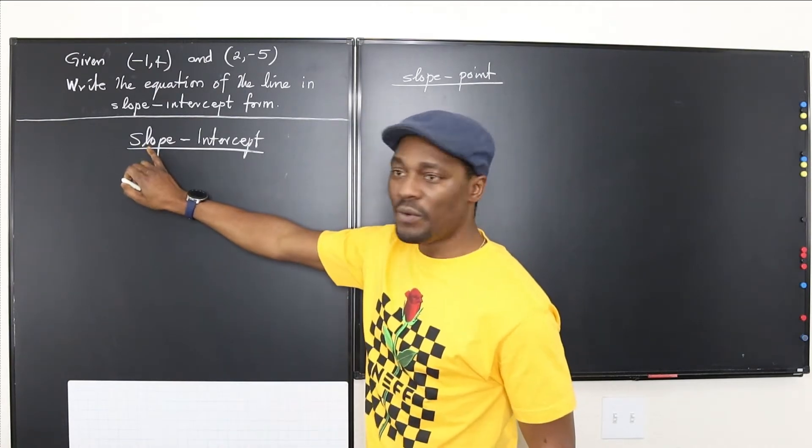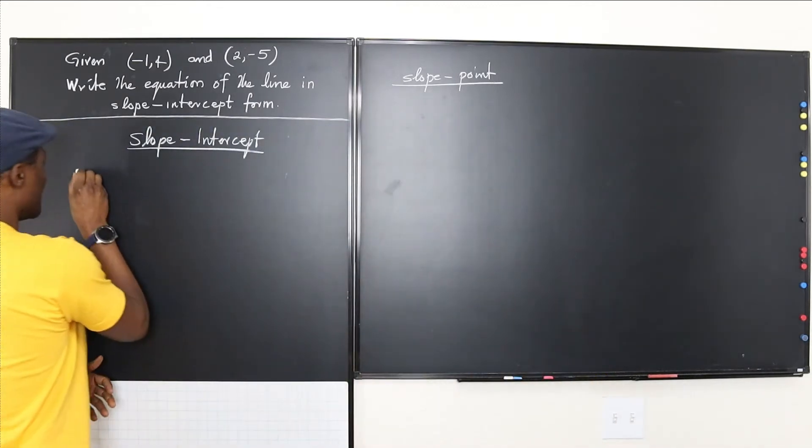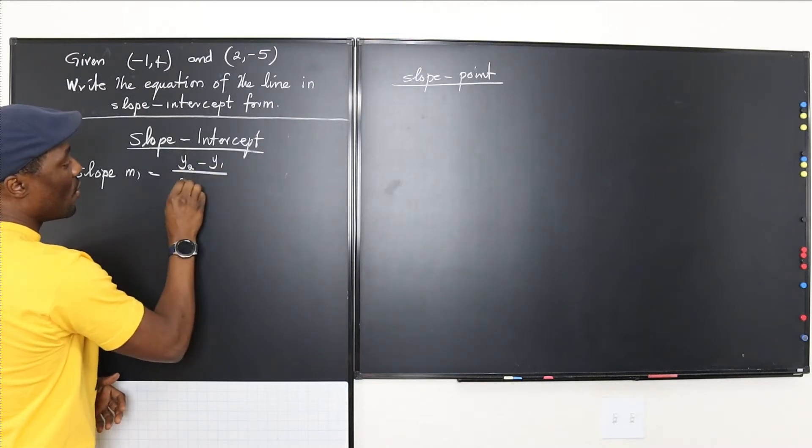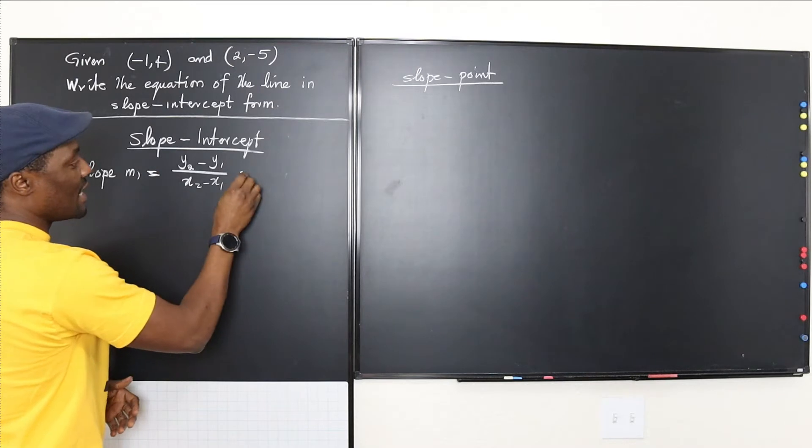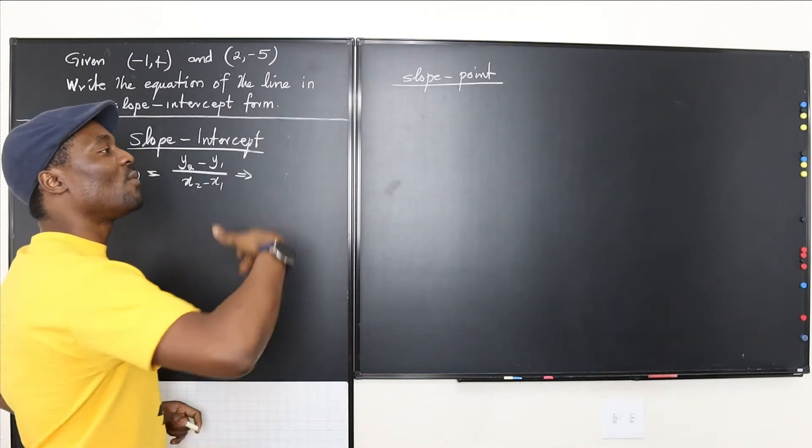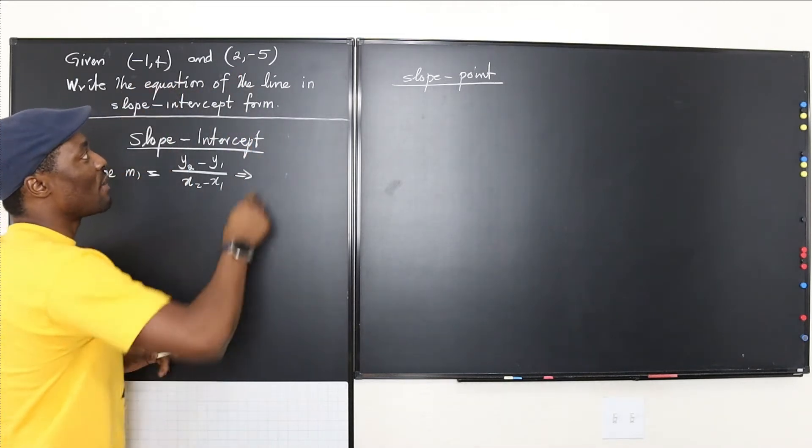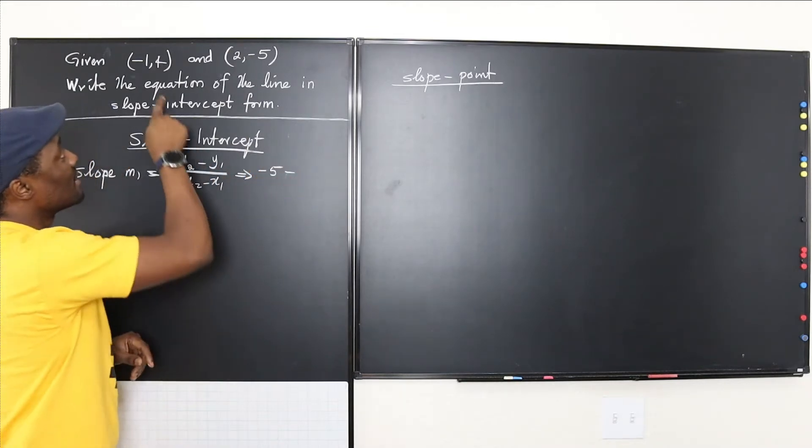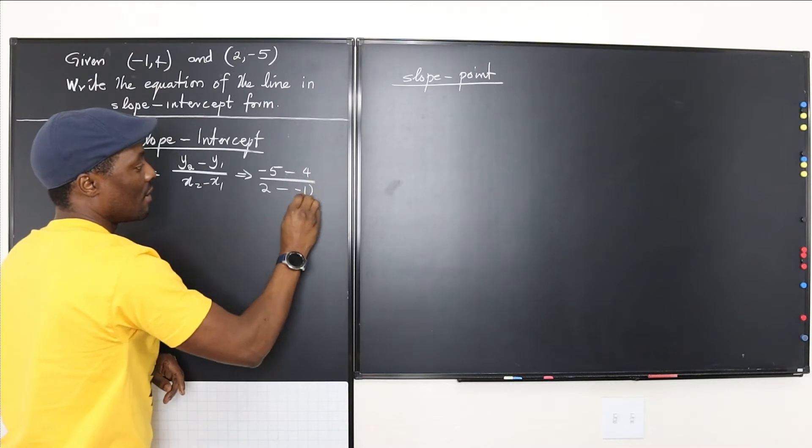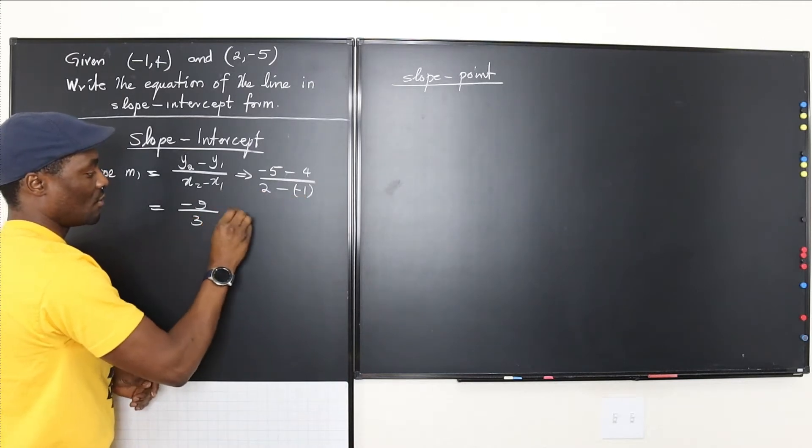Let's talk about the slope-intercept form. Just as you see the name, the first thing to look for when you're given two points about a line is what is the slope of the line. We know that the slope of a line, slope m is y2 minus y1 over x2 minus x1. In this case, I always make the one on the right my y2, the one on the left my y1. So this would be my y2. It's going to be negative 5 minus 4 divided by 2 minus negative 1.